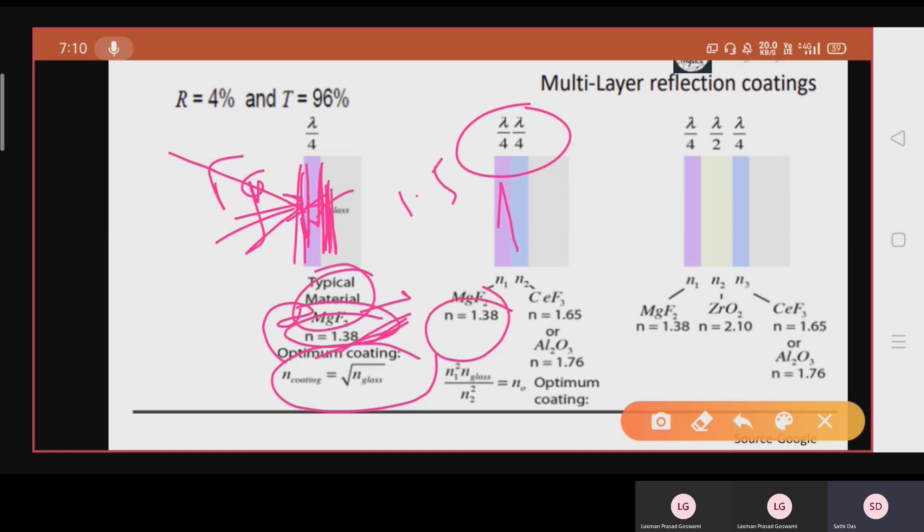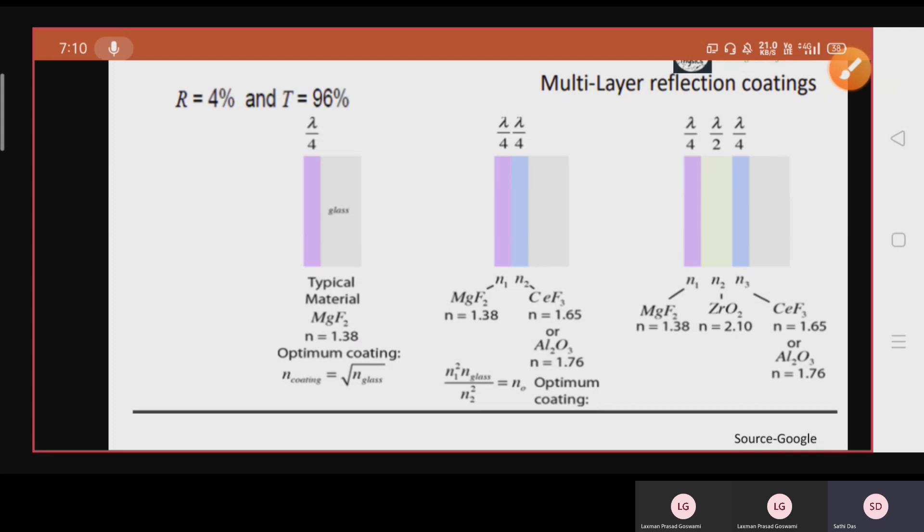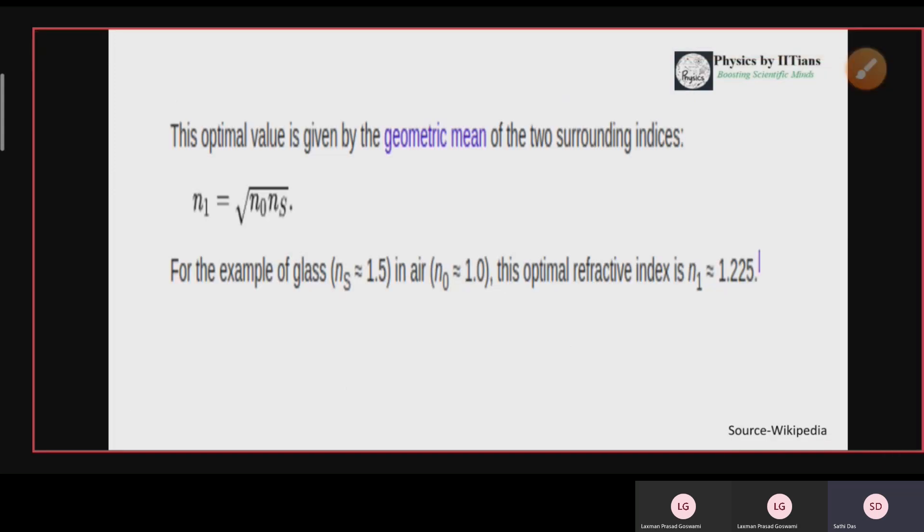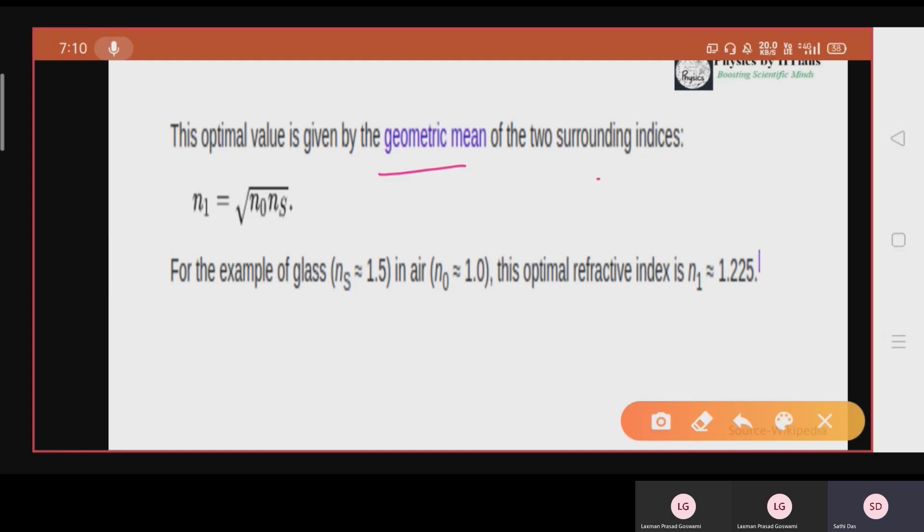Similarly this refractive index is 1.38, 1.65 and this is 1.5. So here multiple thickness with multiple different coatings with different layers can be possible to reduce the reflections at maximum. Now how will you get the optimal value? It will be given by the geometrical mean of the two surrounding indices. That is n_1 equals to root over n_0 into n_s.